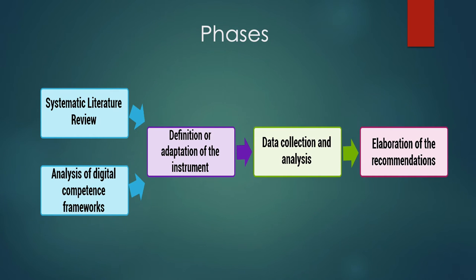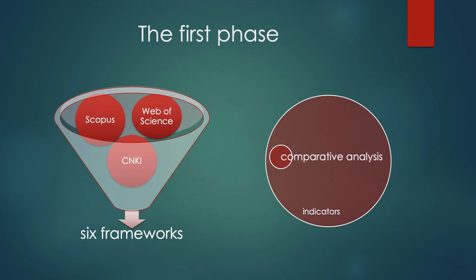This work will follow two phases. First, the research carried out a systematic literature review and analysis of digital competence frameworks which had been applied in other regions. A systematic literature review conducted a search in three electronic databases. There are six main frameworks that have been identified.